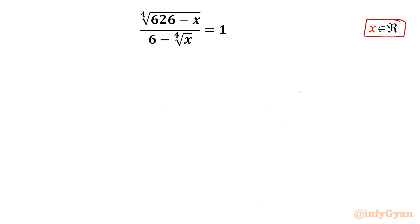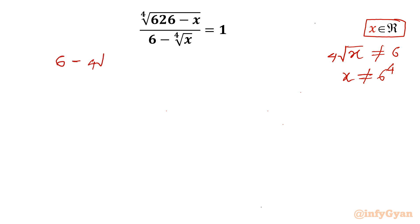Let us get started by writing that the denominator cannot be 0. So, 4th root of x cannot be equal to 6, which means x cannot be equal to 6 to the power 4. Now I can cross multiply the written terms, so I can write 6 minus 4th root of x equal to 4th root of (626 minus x).